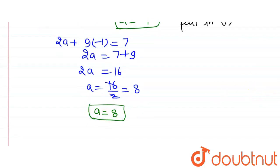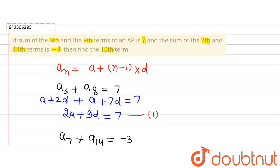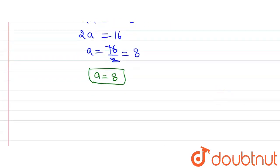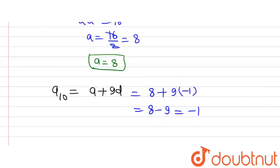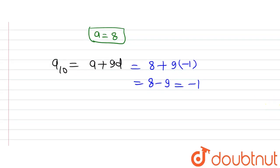Now we were asked to find the 10th term, A10. Using the nth term formula: A10 = A + 9D = 8 + 9(minus 1) = 8 minus 9 = minus 1. So the 10th term of the AP is minus 1.